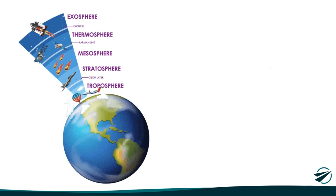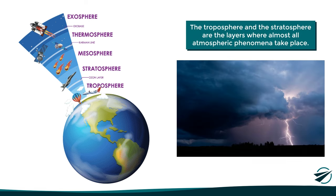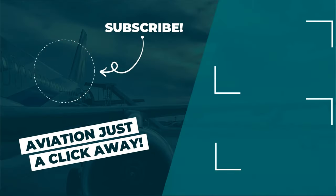With this, we have already talked about all the layers of the atmosphere and their characteristics. We must point out again that the troposphere and the stratosphere are the layers where almost all meteorological phenomena take place, and are therefore the most important in terms of weather development. I hope the information presented in this video was useful. If so, don't forget to share, like, subscribe, and leave a comment down below. It would help me a lot. Thanks for watching, and I'll see you next time.